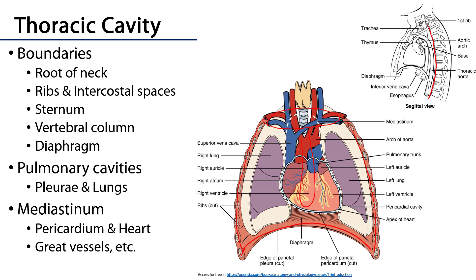Within the thoracic cavity there are three spaces. Laterally, we have what are known as the pulmonary cavities, and these pulmonary cavities are going to contain the lungs and the serous membranes which encase them, called the pleura.